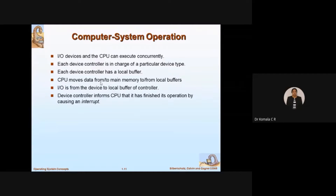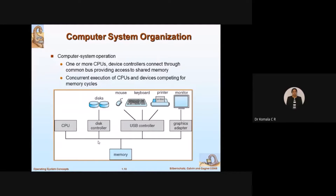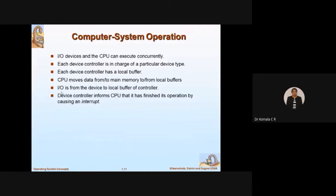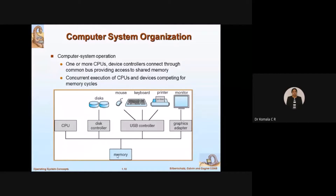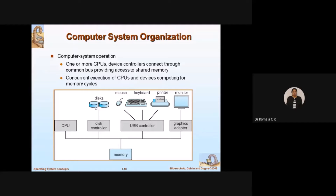The CPU moves data to and from main memory or to and from local buffers. Either you can have data transfer from memory to an output device, or from a device to memory. Input operation means transferring data from disk to memory. Output operation means transferring from memory to disk. For input: first you transfer data from the device to the buffer of the disk controller, then from the buffer to memory. For output: first transfer from memory to the buffer, then from the buffer to disk.